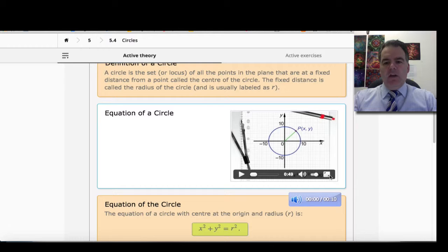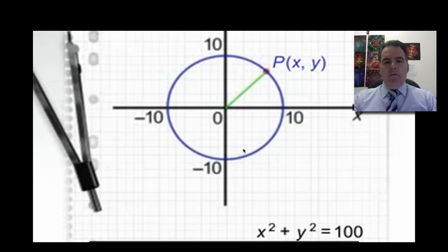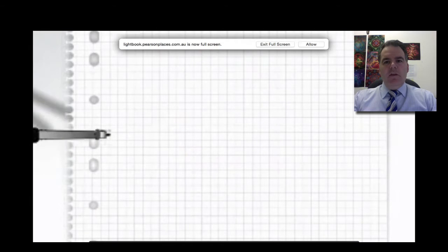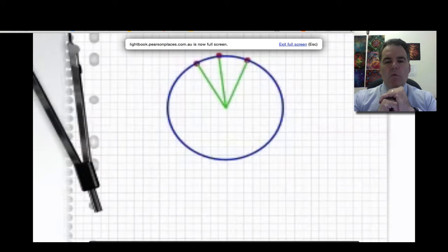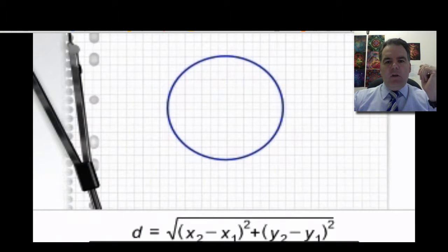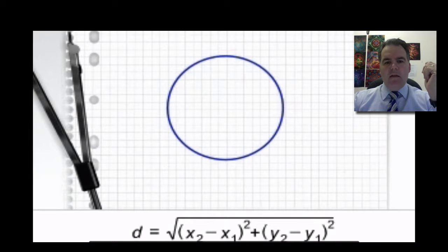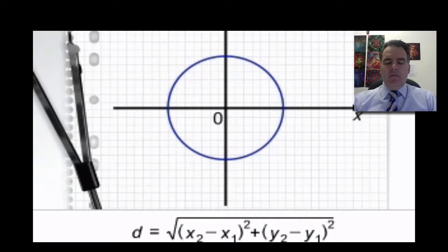So first of all, starting off with circles, this little video kind of describes what's going on here. We can think of a circle as just the set of points the same distance from one point. So in this one here, the circle is 10 units away from that centre point there. So we can use the distance formula to think of this.